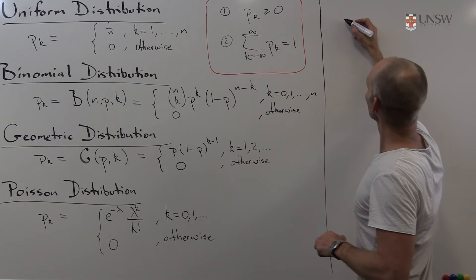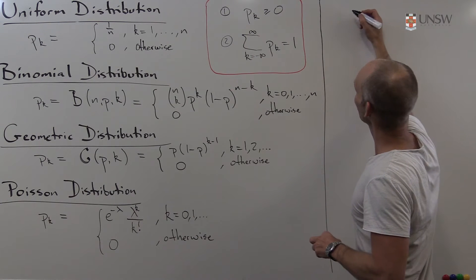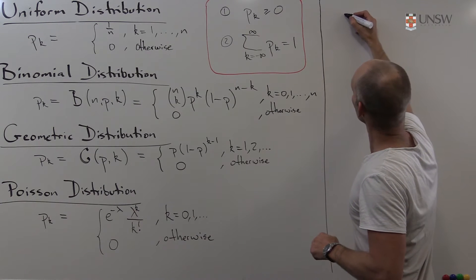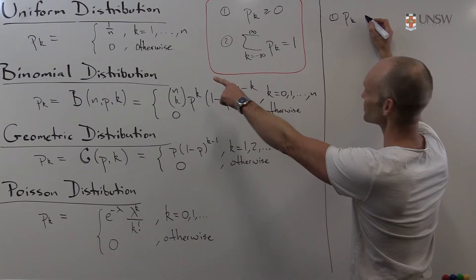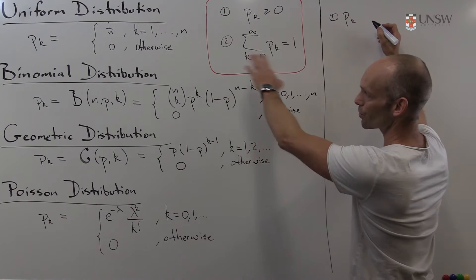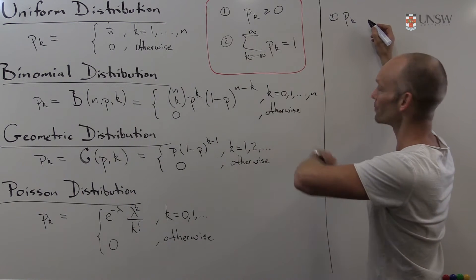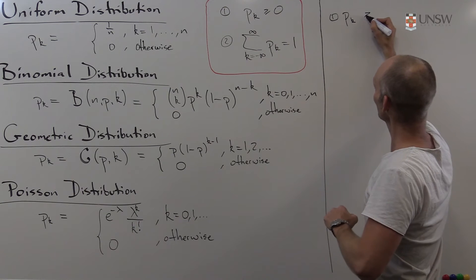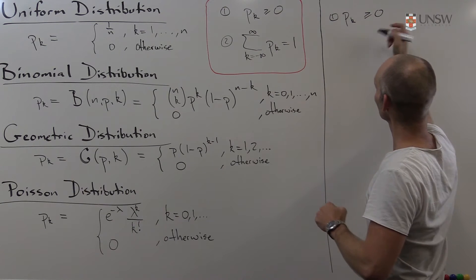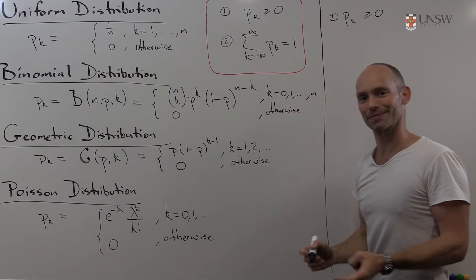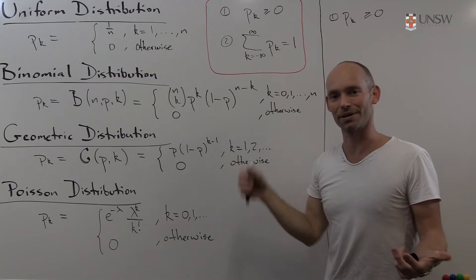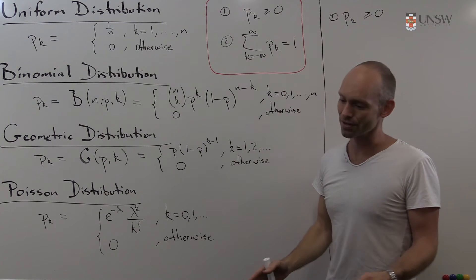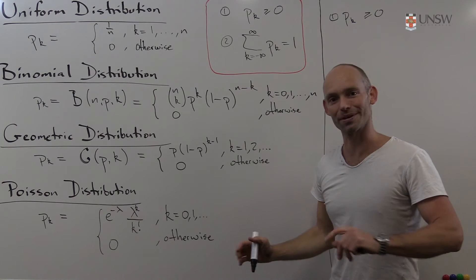We have p(k). For the first condition: p(k) is either 0 or 1 over n, so it's obviously non-negative. That's super easy — you can't really write much more in an explanation than that.